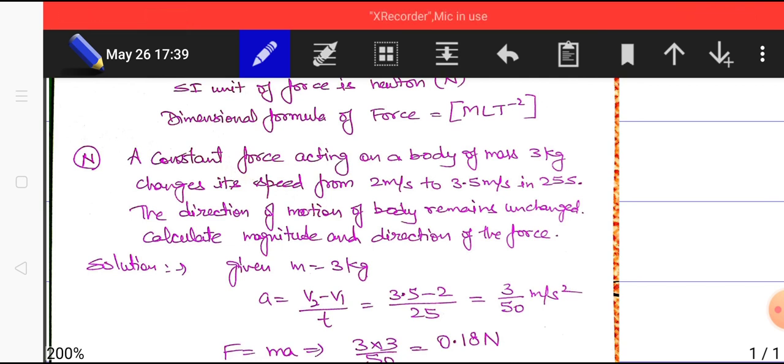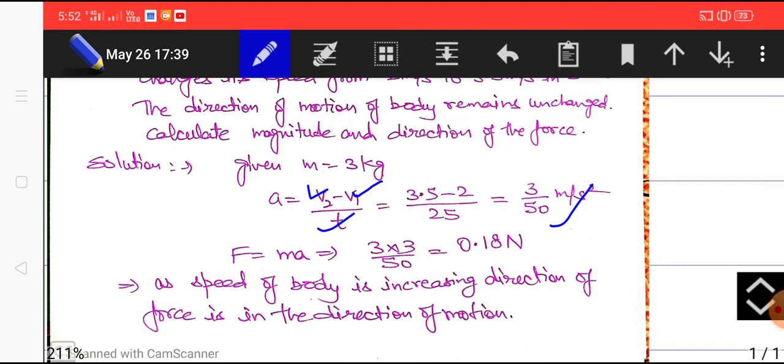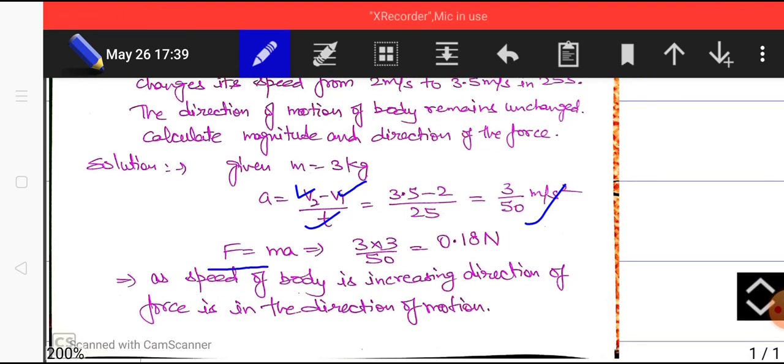The direction of motion of body remains unchanged. Calculate the magnitude and direction of the force. As the body is accelerated we can calculate the acceleration first: change in velocity v2 minus v1 divided by time 3.5 minus 2, 3 by 2, divided by 25, 3 by 50 meter per second squared. And by Newton's second law of motion F equals ma.